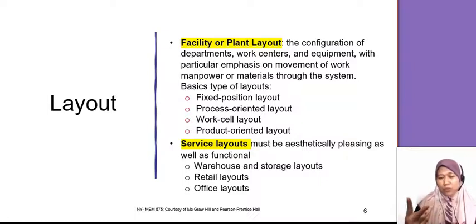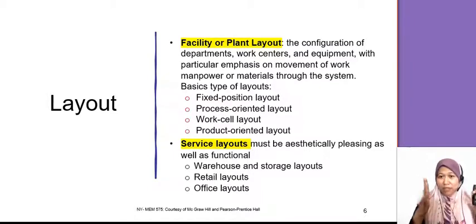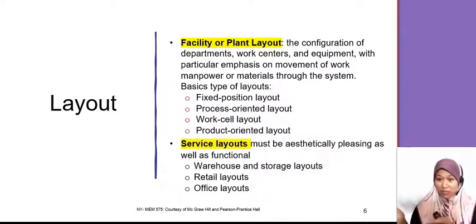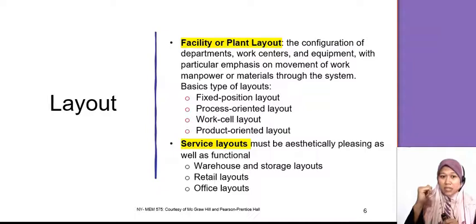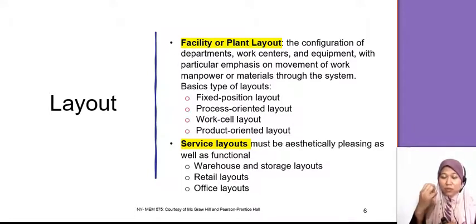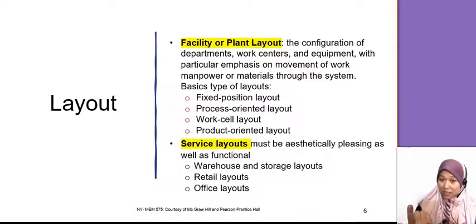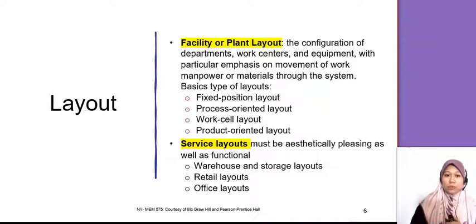There are two parts of layout. The first one is layout at the facilities or manufacturing side, and the other is service layout. Facilities layout has four types: fixed layout, process-oriented, work cell, and product-oriented. For service layout there are three types: warehouse or storage layout, retail layout (for example supermarket), and office layout. We need to know the characteristics of each layout.